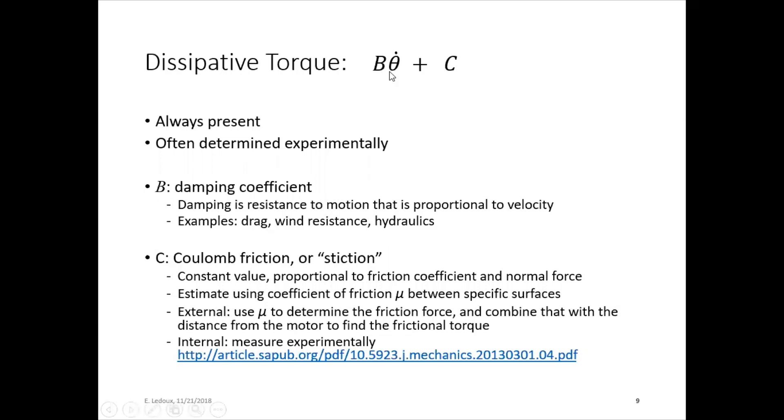So B is the damping coefficient. This damping term is proportional to velocity. So if the system's moving faster, you'll have more damping than if the system is moving slower. An example of damping is like a slow closed door. And also something like wind resistance, fluid resistance, drag, those kinds of things have damping.